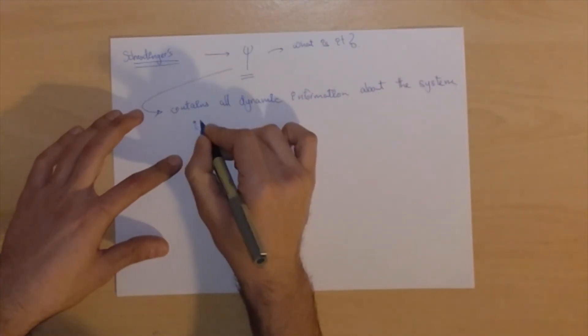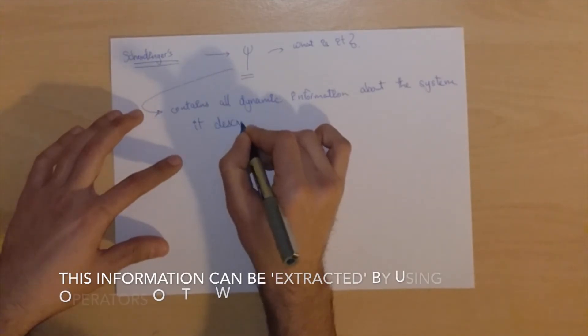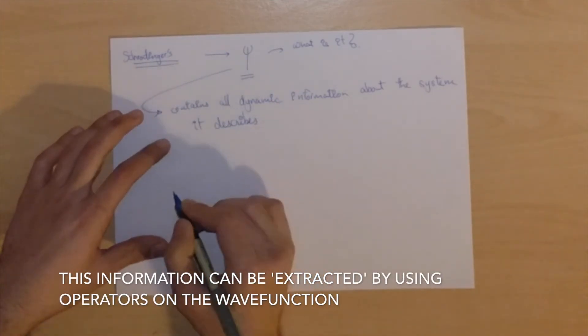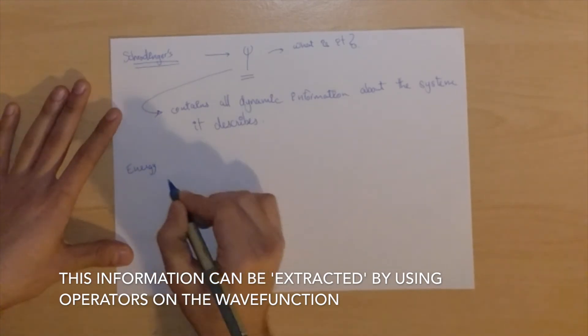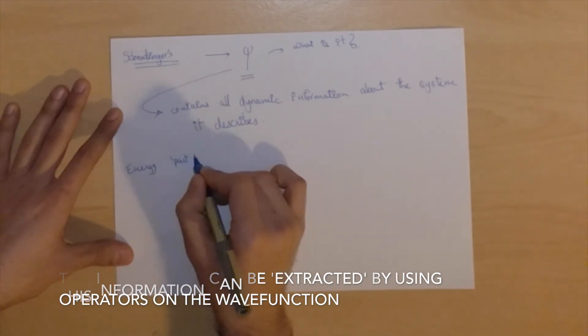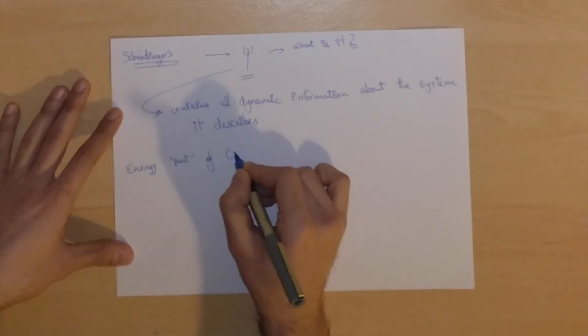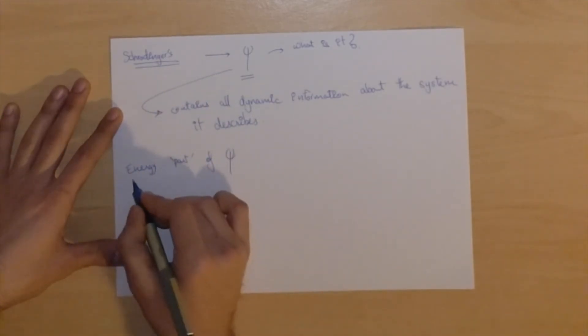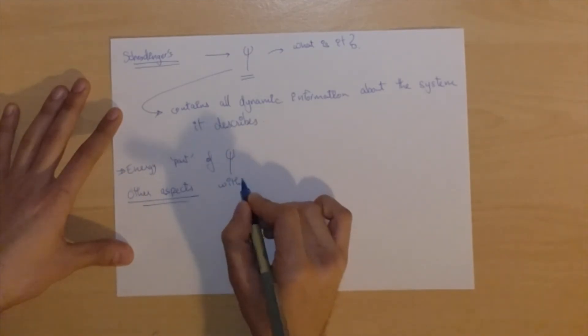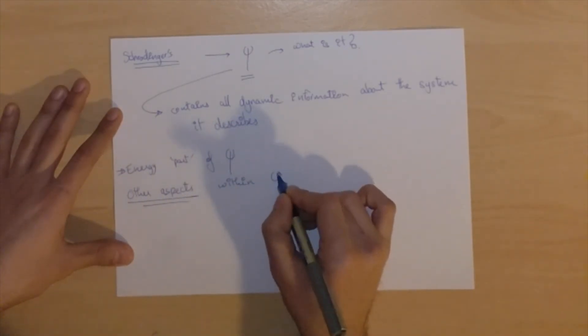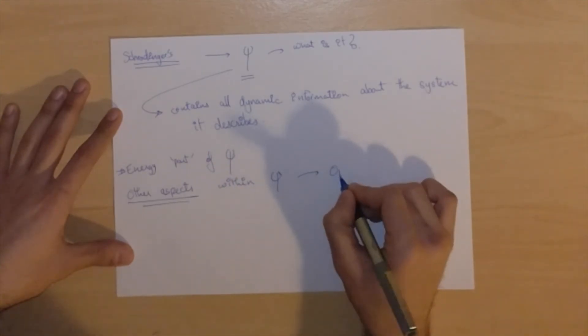So far we have only looked at the energy part of the wave function, but in reality we can look at other aspects or other pieces of information within the wave function using different operators.